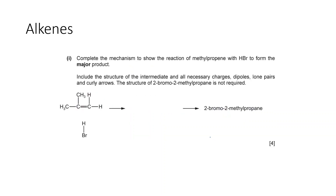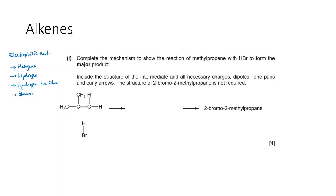Alkenes react with four different reactants via addition reactions: halogens, hydrogen, hydrogen halides, and steam. The mechanism is electrophilic addition. An electrophile is an electron-deficient species. Hydrogen bromide HBr has a partial positive hydrogen — this is the electrophile — attracted to the electron-rich carbon-carbon double bond.